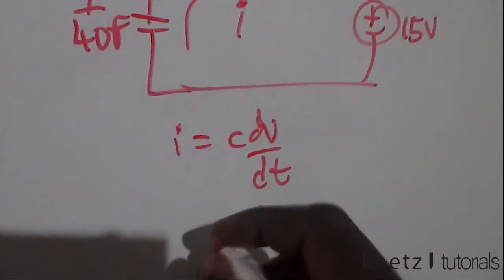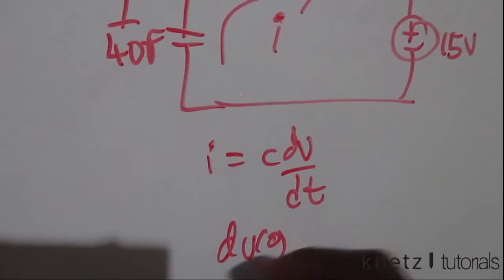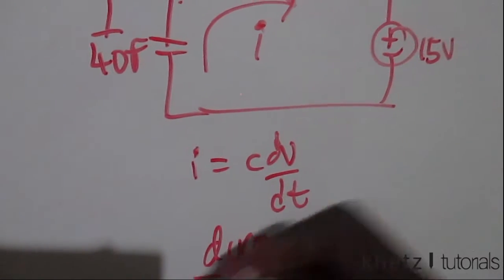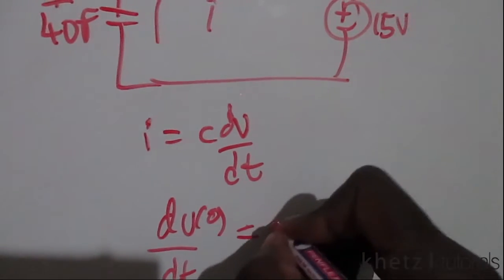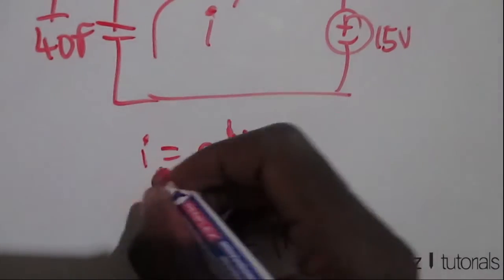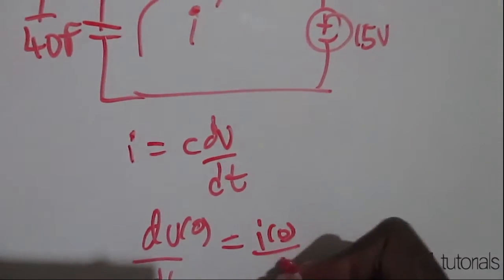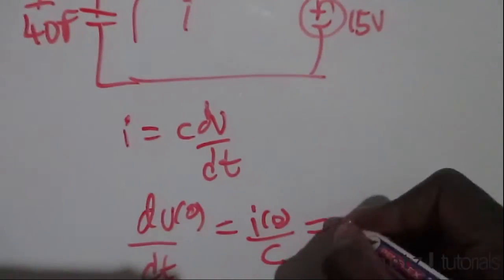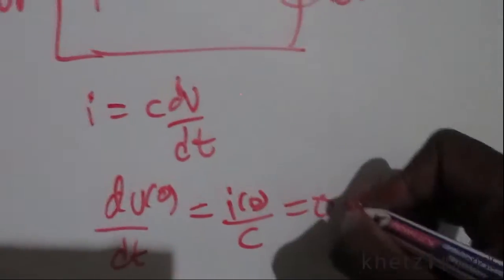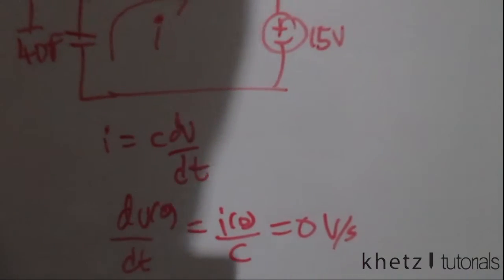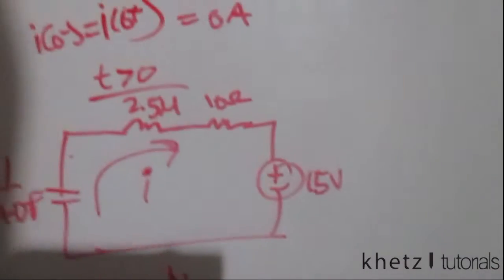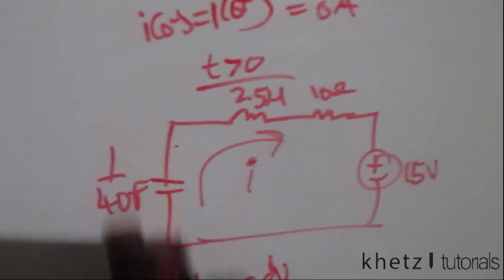We are interested in finding v(t), and the initial condition dv/dt at t=0 will help us solve that. We have dv/dt(0) equals i(0) divided by C, and since i(0) is zero, dv/dt(0) equals zero volts per second.